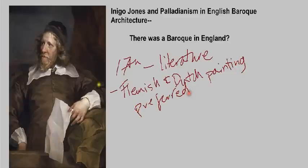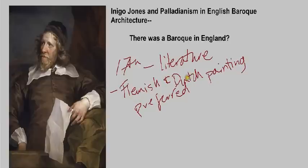In fact, this portrait of Inigo Jones is created from copying a Flemish portrait of the artist. So in terms of painting, the Baroque in England really did rely heavily on Flemish and Dutch art to a large extent. But it's in architecture that the English Baroque really had its own voice.